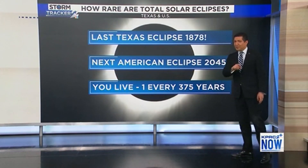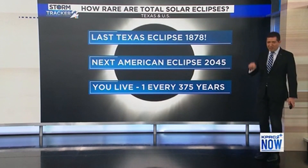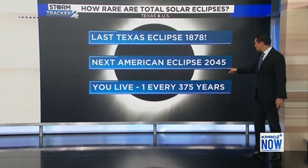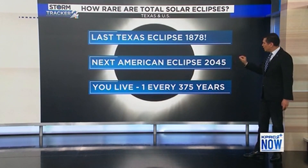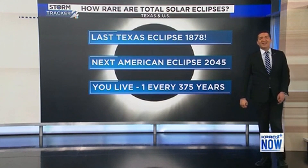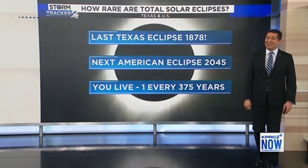So where you live — if you're watching this and you're staying in your spot — you have an average of one total solar eclipse once every 375 years. Just incredible.